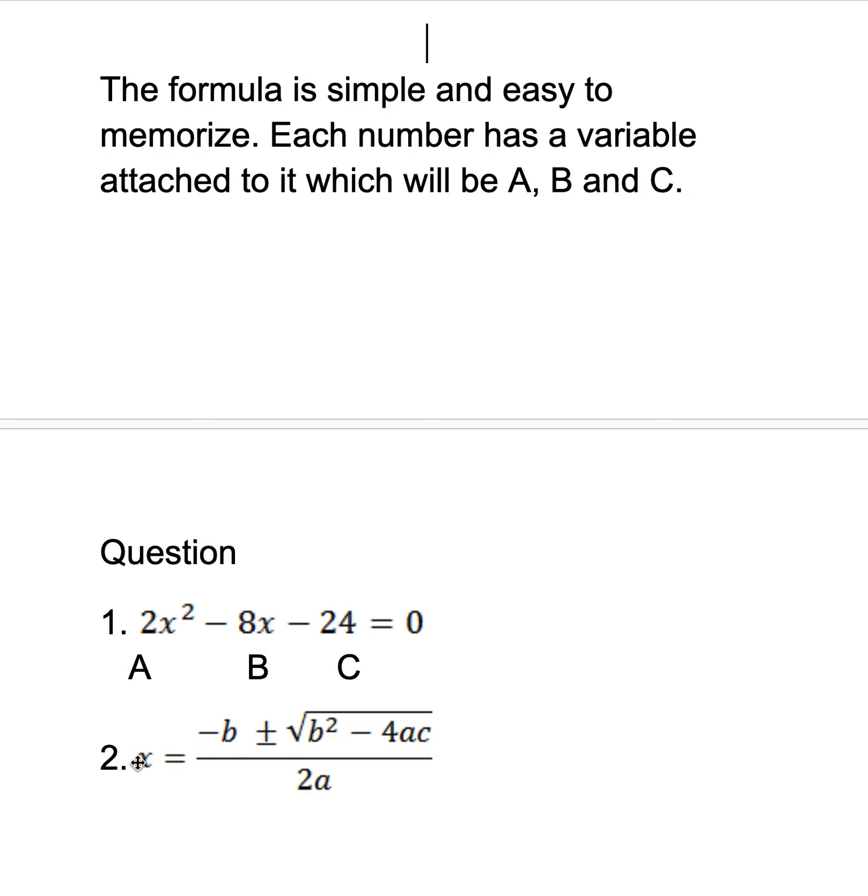Negative b is negative 8, and then plus or minus the square root of b squared - that's negative 8 squared. Then you have negative 4 multiplied by...